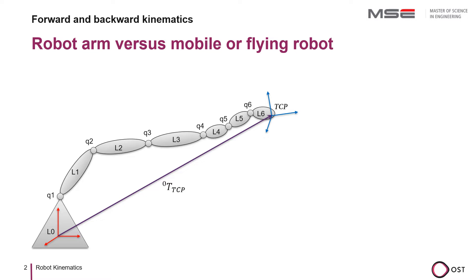With a serial robot arm, I can always use the forward kinematics to precisely determine the position and orientation of the tool center point TCP from the generalized robot coordinates, in this case the joint angles. Often I can also determine the generalized robot coordinates or joint angles from the position and orientation of the tool center point using backward kinematics.